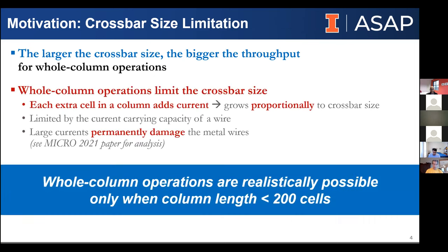The problem we found working across the stack is that as you add more devices to the size of your column or row doing computation, you add so much current for every additional cell that you come up against the current-carrying capacities of the wires making up these arrays. Practically speaking, it's difficult to do whole-column operations on arrays larger than 200 by 200.